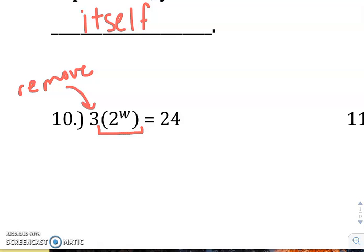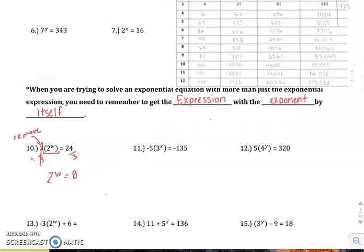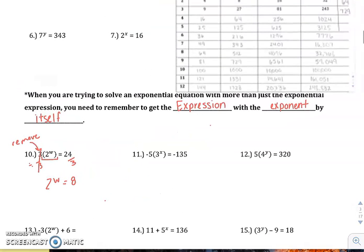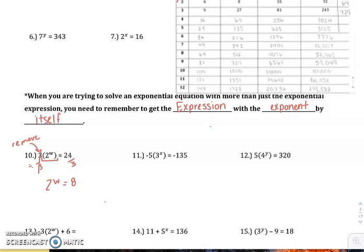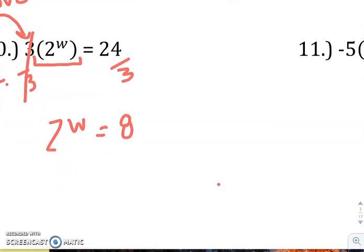It's 3 times that, so we'll divide both sides by 3, and then we have 2 to the W. 24 divided by 3 is 8. So then if you go up and reference that chart, find 2, 2 to what power is 8? 2 to the third. So W will equal 3.